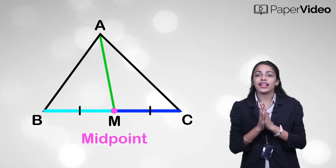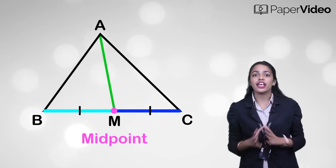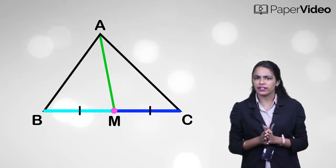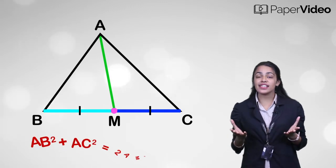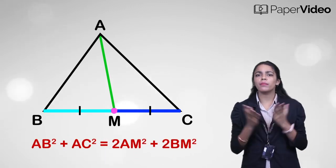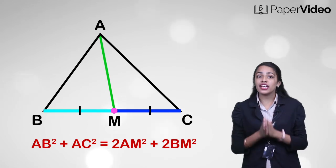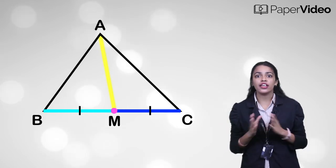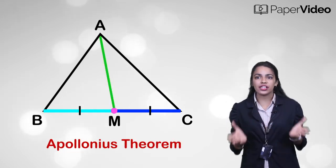According to the theorem, in triangle ABC, if M is a midpoint of side BC, then AB square plus AC square equal to 2AM square plus 2BM square. This relationship between the length of sides and median of a triangle is known as Apollonius Theorem.